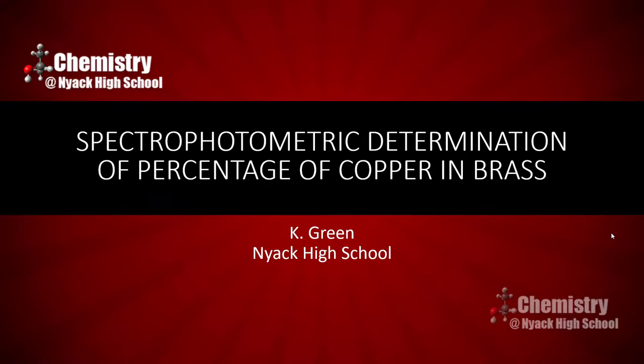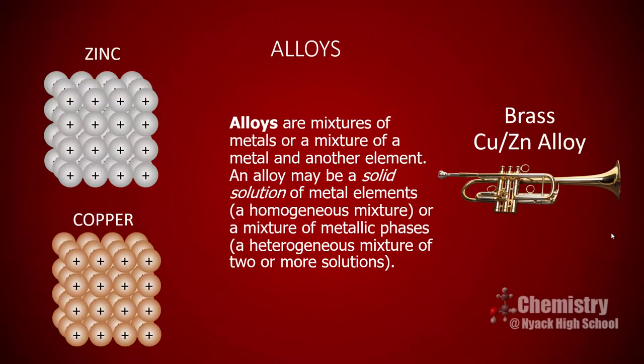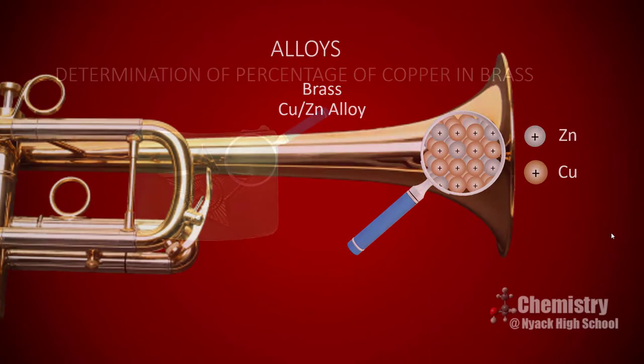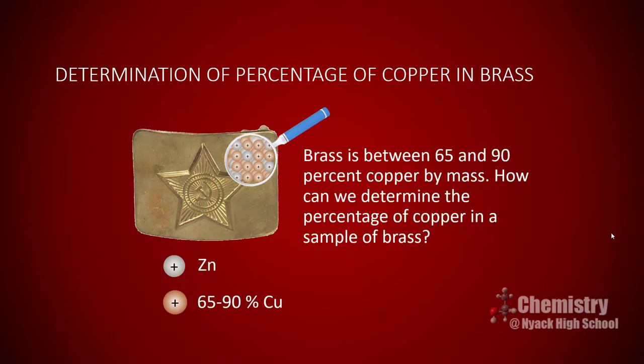Good morning. Today's lab is a spectrophotometric determination of the percentage of copper in brass. Alloys are mixtures of metals, or a mixture of a metal and a nonmetal. Brass is an alloy of copper and zinc. The specific percentages of copper and zinc will vary — brass can be anywhere between 65 to 90% copper. Today's lab is to determine the percentage of copper in a sample of brass.